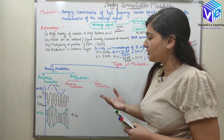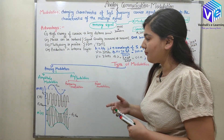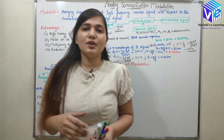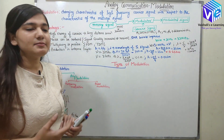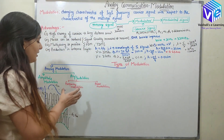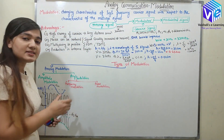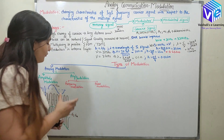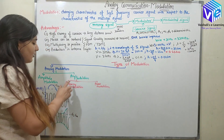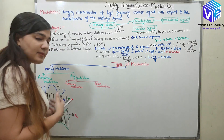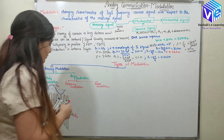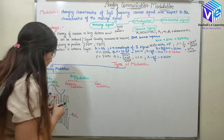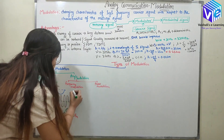Now coming to the second type of modulation which is frequency modulation. As the name suggests, here the frequency of the carrier signal would be changed in accordance to the message signal — frequency is changed with respect to the message signal.